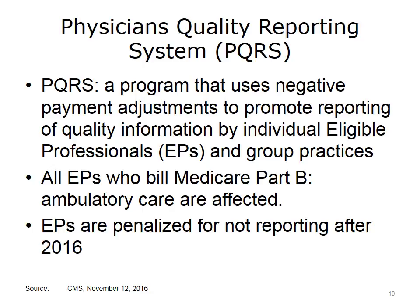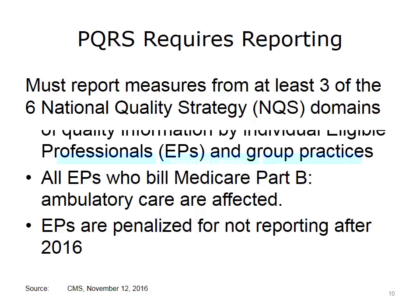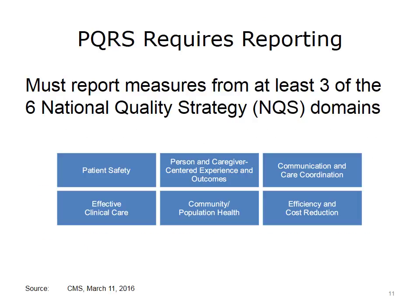Beginning in 2016, EPs automatically are penalized for not doing PQRS reporting. Starting in 2017, PQRS will merge into MIPS. Currently, all EPs must report on nine measures from at least three of the six National Quality Strategy, or NQS, domains. The PQRS measures consist of either process improvement measures or health care outcomes measures within these strategies.